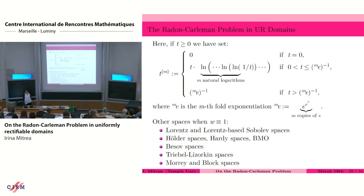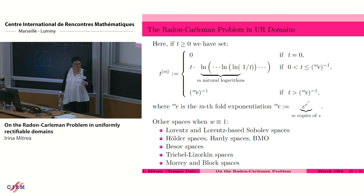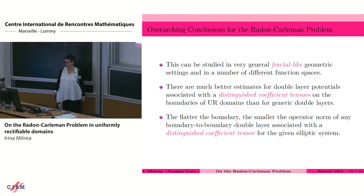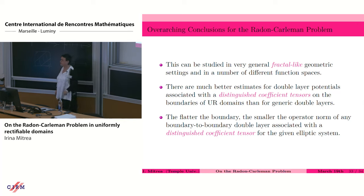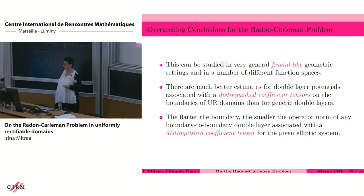This can be done when the weight is 1, and also for a bunch of other function spaces, not just Lp. Everything in this theorem is sharp: if you violate any of the conditions — on the distinguishedness of the coefficient tensor, on the geometry, or on the other hypotheses — you can construct a counterexample. To summarize: the Radon-Karlemann problem can be studied in very general fractal-like geometries and in a number of different function spaces. It is very important that you're dealing with a distinguished coefficient tensor. In that situation, the flatter the boundary, the smaller the operator norm is. Thank you all for your attention.